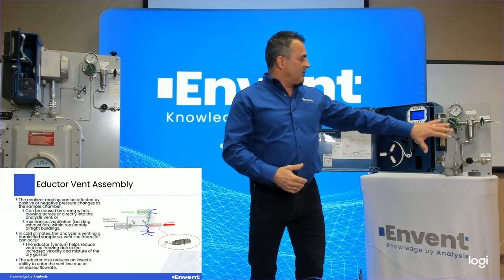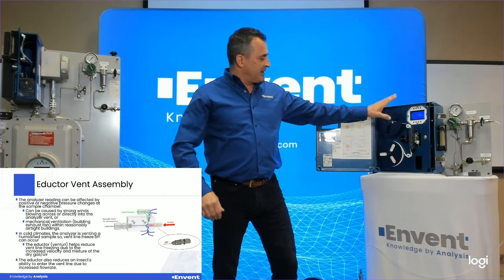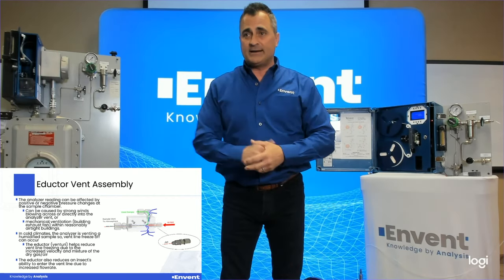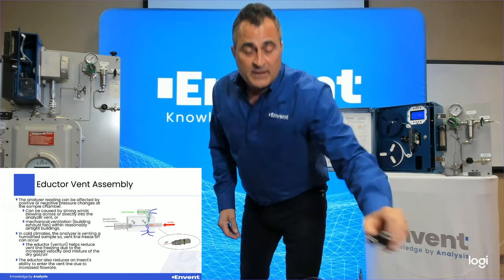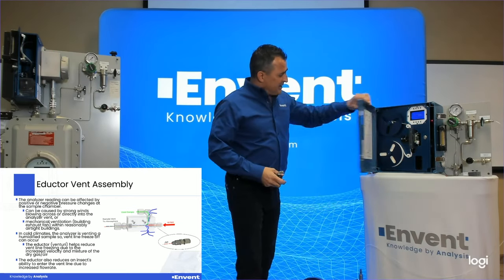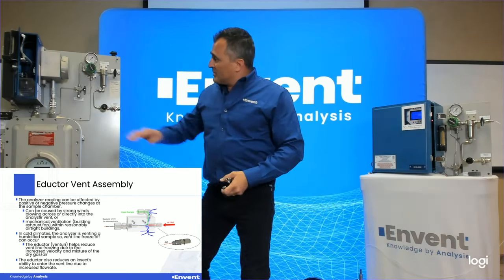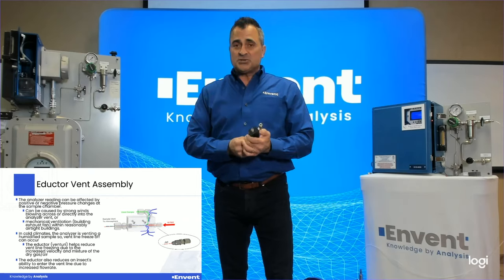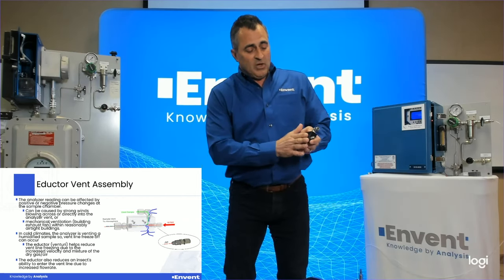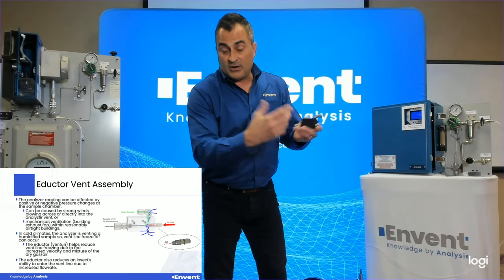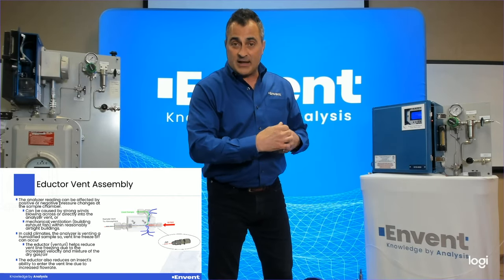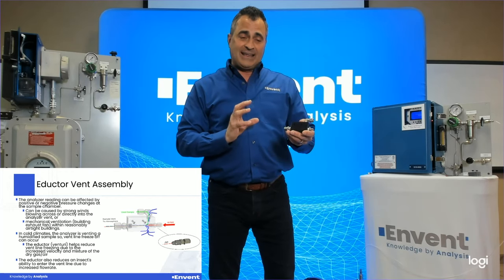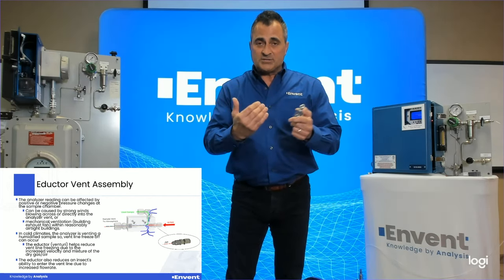Now we've talked about bringing the sample in, humidifying it, and running it through the sample chamber. Now we're talking about getting the sample out — out of the vent, out of the analyzer, and outside. What we have is an eductor. It's mounted on the analyzer — all our analyzers come with this eductor. Basically it's a venturi. We put this block at the end because our spent sample exiting the sample chamber is vented outside. We do not recommend putting any resistance on that vent, or you're going to affect the pressures at the sample chamber.